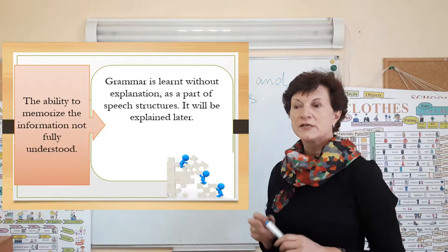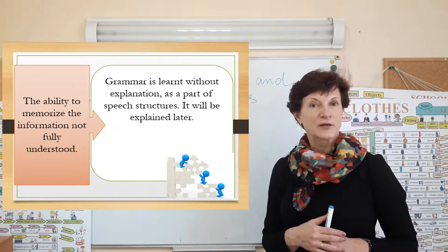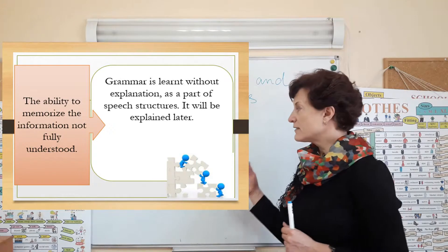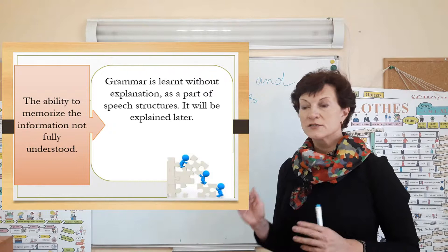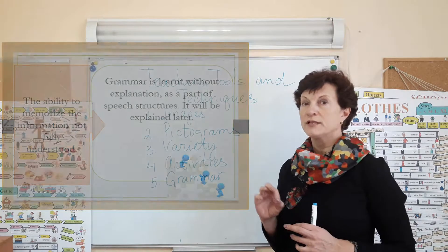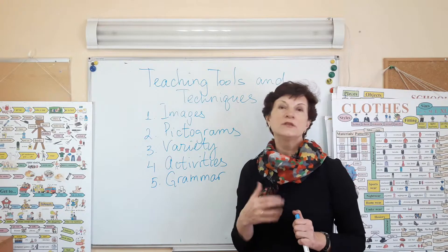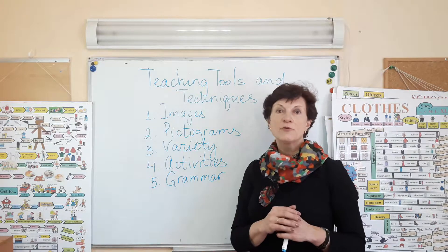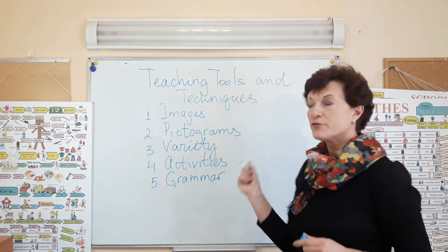Our teaching philosophy is based on the idea that students have to develop their language awareness, but there is a certain age for this. At the age of six, grammar is taught implicitly. We do not concentrate on grammatical rules, but we do concentrate on language accuracy. As we teach in a non-native environment, which we call a passive environment, our students have many difficulties in developing their pronunciation.